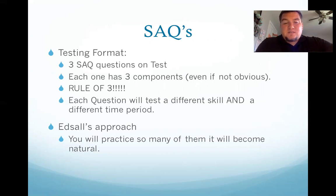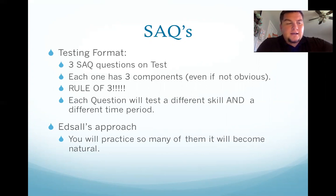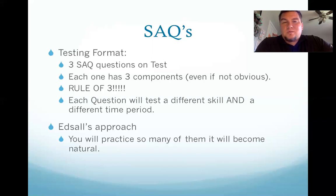Each question will test a different skill and a different time period. The skills include comparison, causation, and continuity and change over time, which we'll get to later. There's going to be a document in at least one of them and you're going to have to analyze the document. It's very common for them to use secondary sources, which we'll get to later. My approach in this class is you're going to practice so many short answer questions that you don't really have to worry about it — it'll just be something you do.